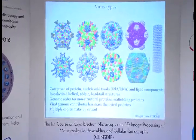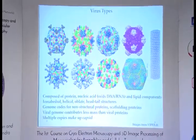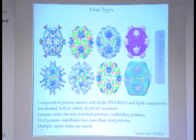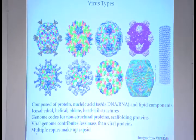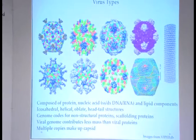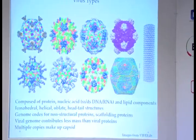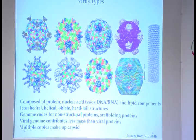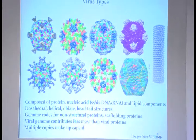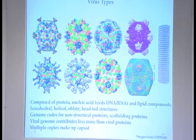The genome of a virus, apart from the capsid proteins, also codes for non-structural proteins and scaffolding proteins. Non-structural proteins are those which help in virus replication, interaction with host, host immune suppression, etc. Scaffolding proteins are those which actually help the virus capsid form.